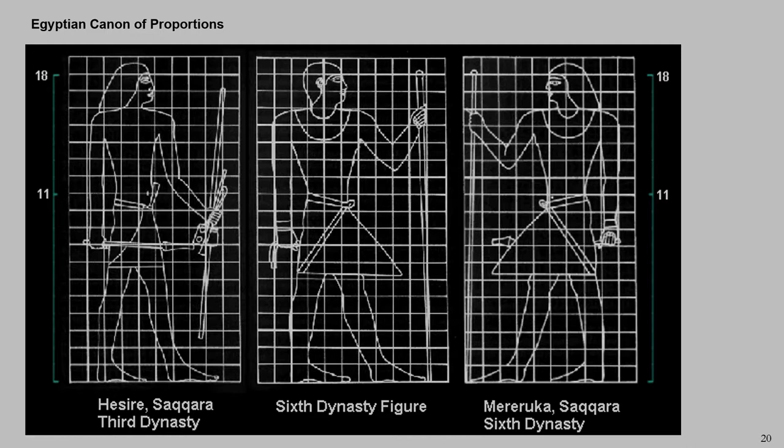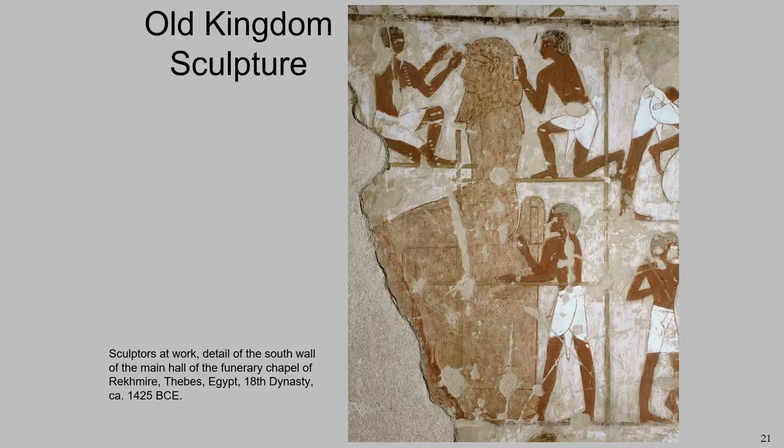They wanted this sort of unchanging quality because, at the heart of it, the Egyptians believed that if things changed, if things were altered, then that could have dire consequences — the world could fall apart. So it was very important to maintain this consistency.